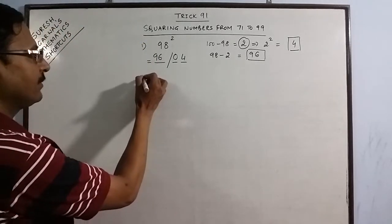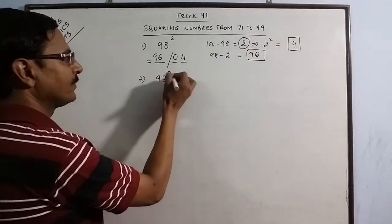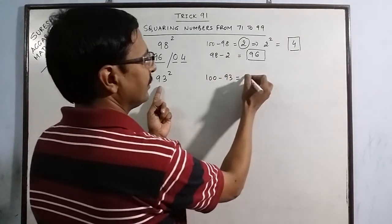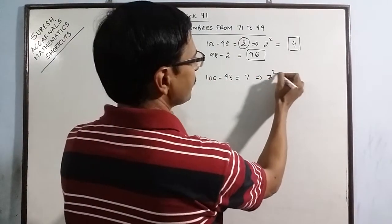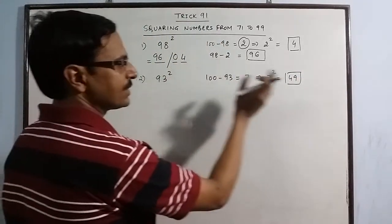Understand this in a better way. Take one more example. Say we have this time 93 square. See 93, 100 minus 93 is 7. So you have 7 square as 49. This will give you the last part of your answer.